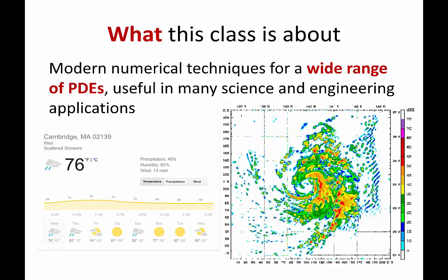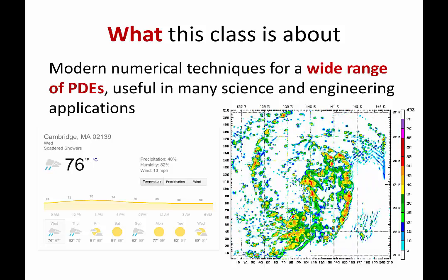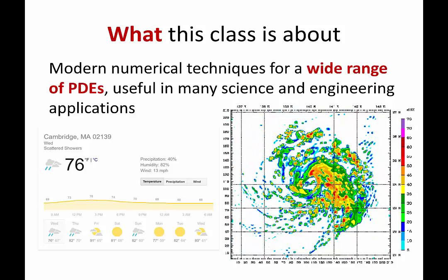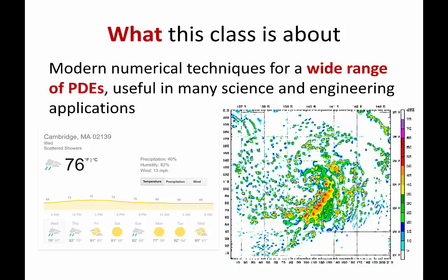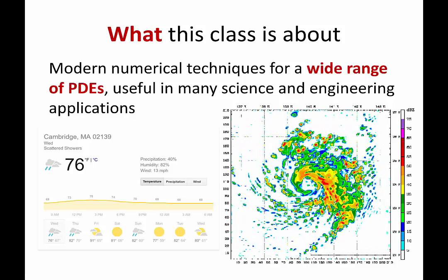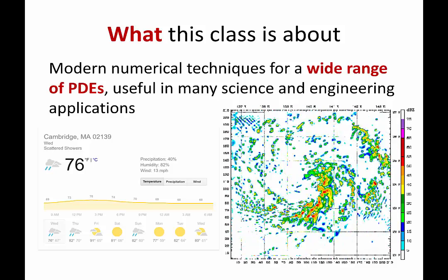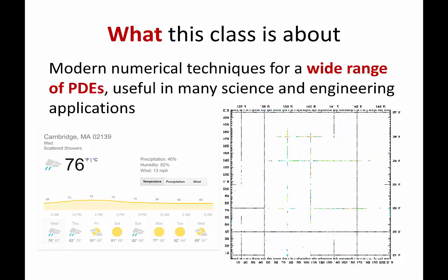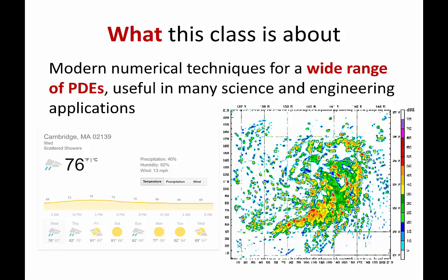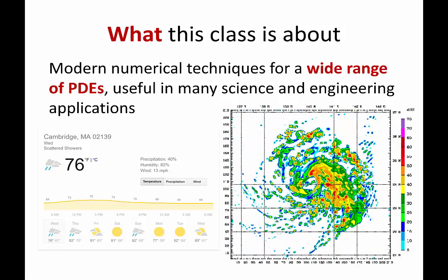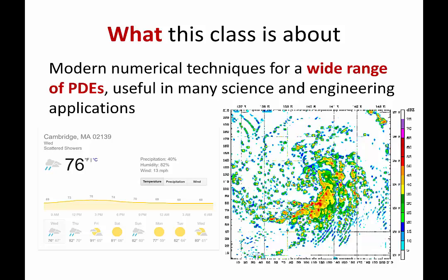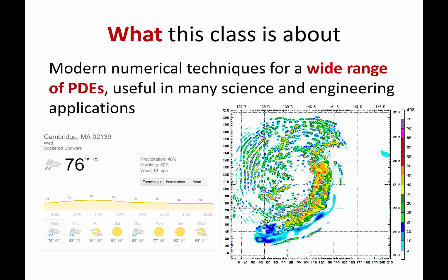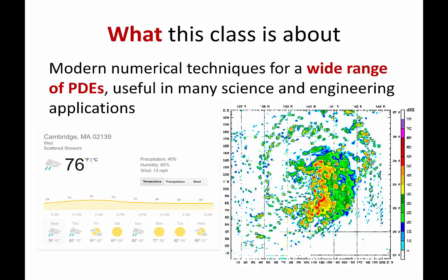In that numerical solution, the differential equation doesn't know anything about, for example, hurricanes. It only knows how the velocity, pressure, and humidity change corresponding to the environment around them. But once you put these equations into the computer, you will see all kinds of phenomena like hurricanes, polar vortex, and things like that. And this is pretty amazing.